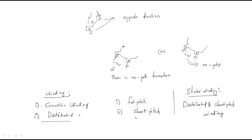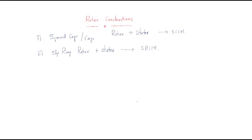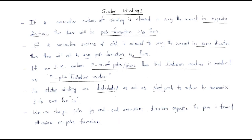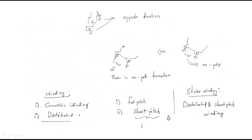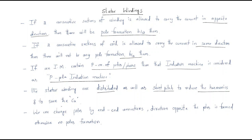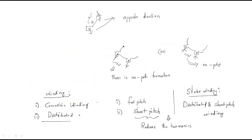By using distributed and short pitch winding, the main advantage is that it reduces harmonics. Harmonics are unwanted frequencies, and this winding configuration reduces them. The other important advantage is saving copper: for full pitch winding the complete copper length is used, but for short pitch winding the copper length is decreased.